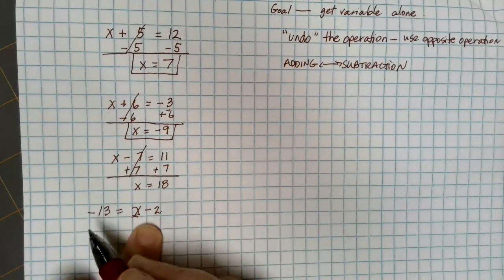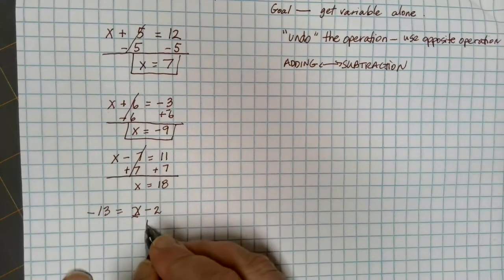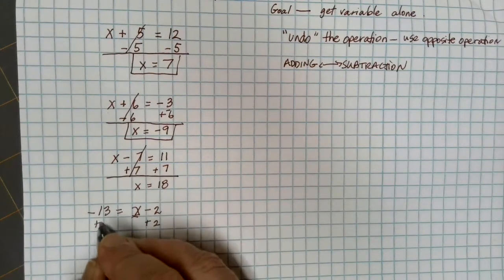So when I go to decide what am I going to do in this instance to get rid of a minus 2, I'm going to have to add 2 to both sides.